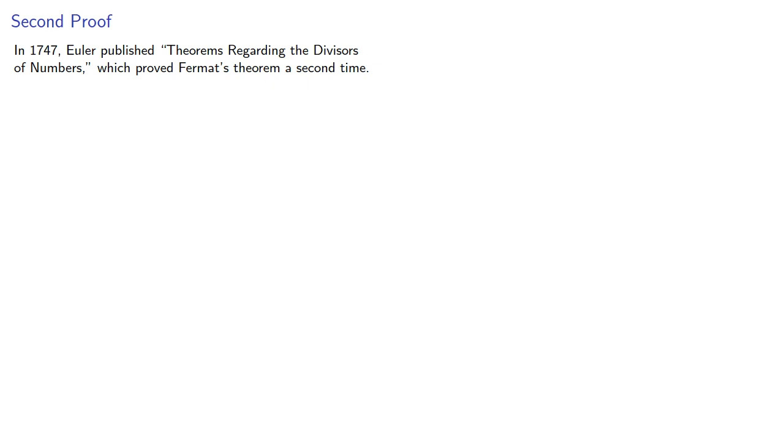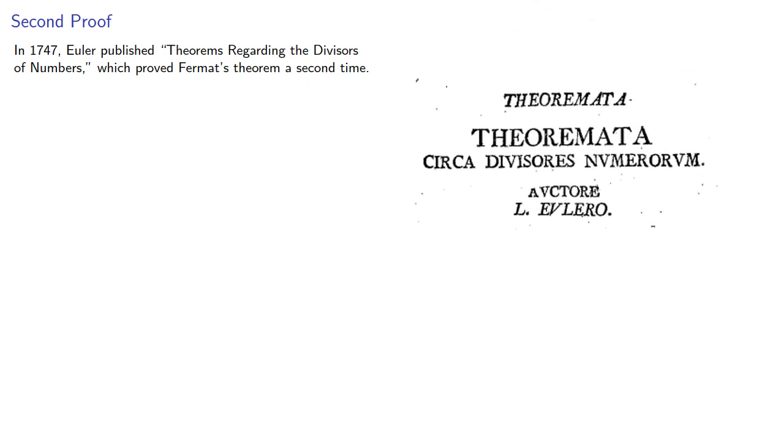In 1747, Euler published theorems regarding the divisors of numbers which prove Fermat's theorem a second time. The induction proof is a little cleaner, but the method is essentially the same. However, this second proof is noteworthy because Euler also gave insight into how he found the factorization of 2 to the 2 to the fifth plus 1.